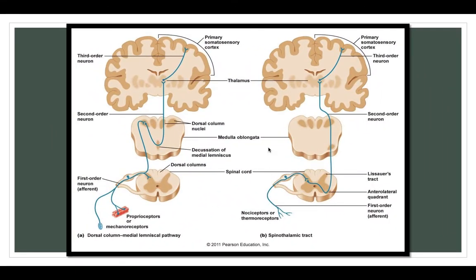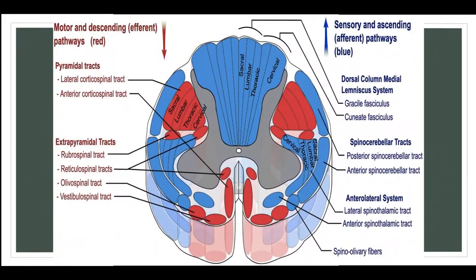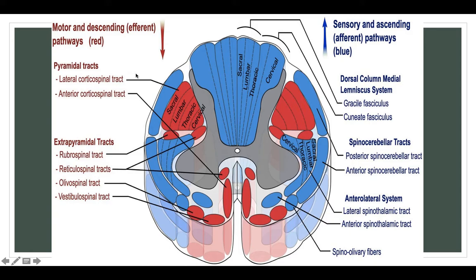This diagram shows the pathway for the dorsal column and the spinothalamic tract. The orientation of all descending and ascending tracts is shown, including the dorsal column medial lemniscal system from cervical to sacral, and the anterolateral system, which involves the lateral spinothalamic tract and the anterior spinothalamic tract.